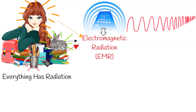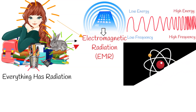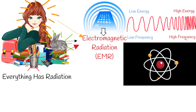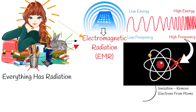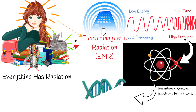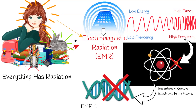Different objects emit electromagnetic energy at different frequencies. The higher the frequency of the radiation, the higher its energy levels. If electromagnetic radiation has high frequency, it can remove electrons from atoms and have the potential to damage human cells and DNA. Such radiation is called ionizing EMR, electromagnetic radiation.